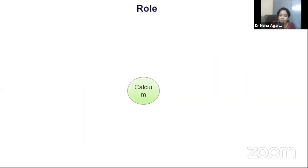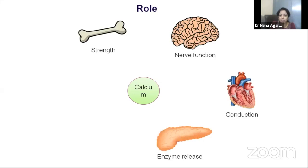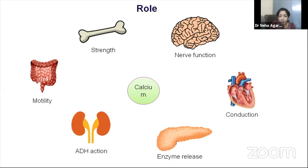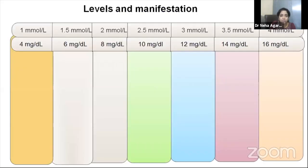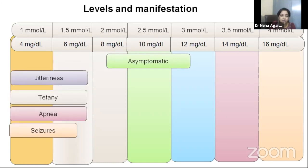Calcium has variable roles in the body — from bone strength and nerve function to cardiac conduction, pancreatic enzyme release, anti-diuretic hormone action, and gut motility. The normal total calcium level is 8–10 mg/dL (divide by 4 to convert to mmol). Below this range, symptoms like jitteriness, tetany, apnea, and seizures develop. In a newborn, unexplained apnea or seizures should always prompt a calcium level measurement.